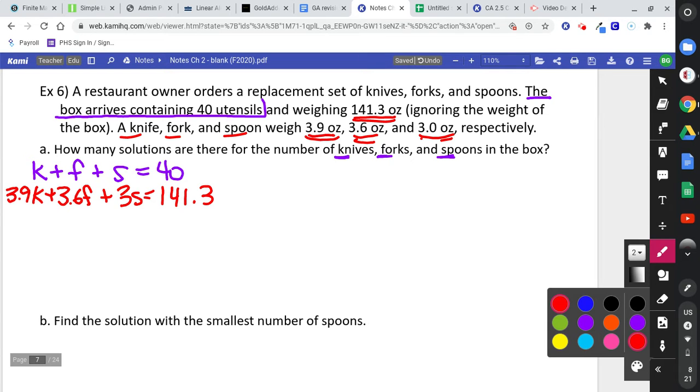So it's really kind of the same type of equation. You've got three things adding up to a total. So I'm going to say 3.9K plus 3.6F plus 3S equals 141.3 ounces. Two things. Number one, this equation I just wrote down is in standard form almost. You're not allowed to have decimals in standard form. So we might just multiply everything by 10.